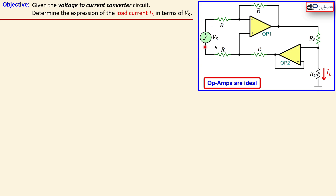In this case VS is given as an AC source, but it can also be a DC source. We have here four resistors, they are all equal to each other. We have also a feedback resistor, and here our load current, which will be pushed into the load resistor.